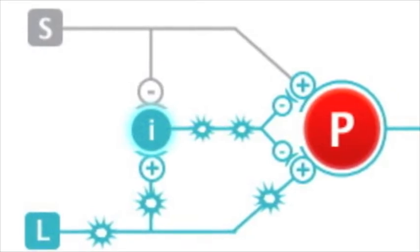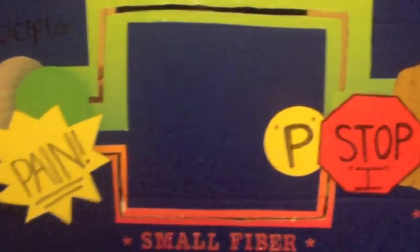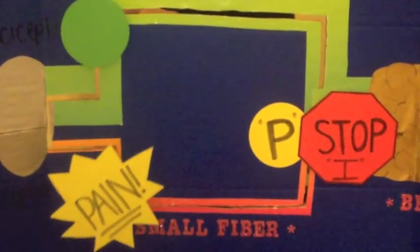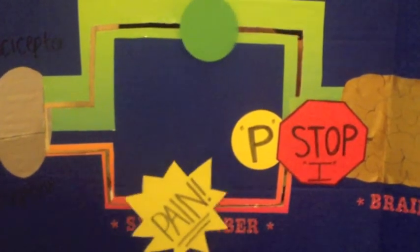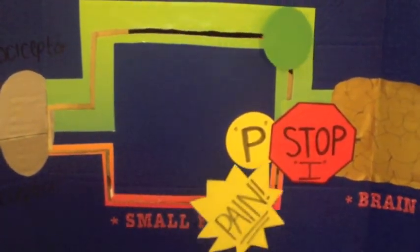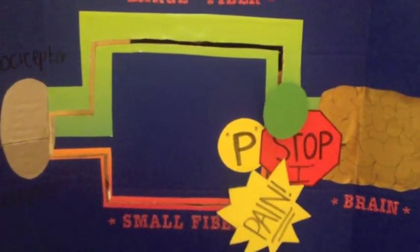When there is no stimulation, both fibers are quiet with no information flowing, and the I interneuron blocks the P neuron, which means the gate is closed. When the gate is closed, no pain is felt.